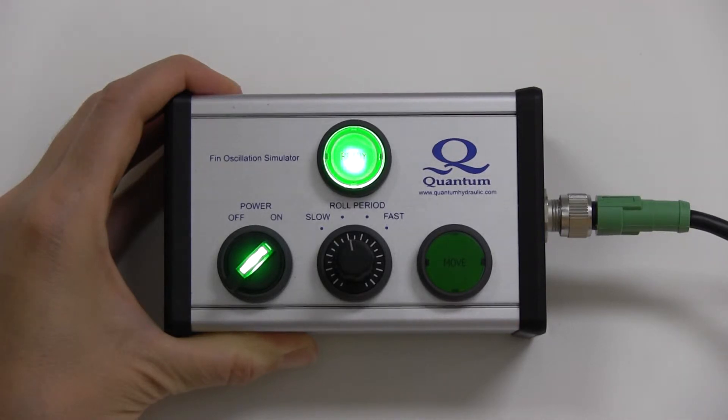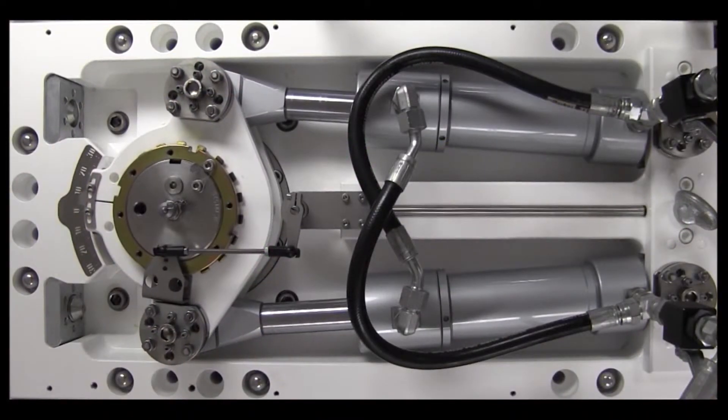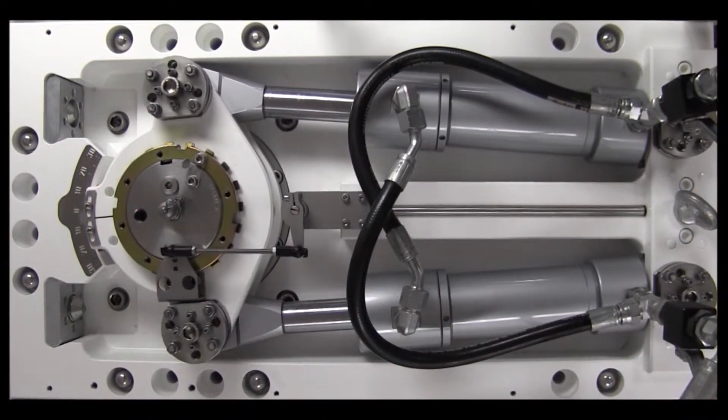The roll period knob, when rotated furthest counterclockwise, corresponds to a long roll period, in which the whole unit rotates slowly.